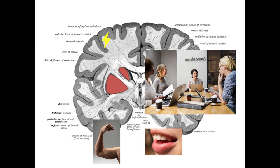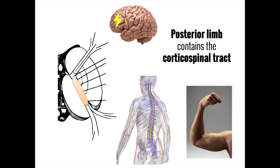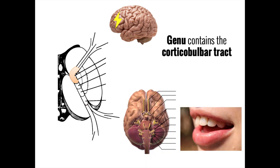So, to recap, the internal capsule bypasses the bureaucracy of the basal ganglia to go straight to the muscles in the rest of the body. The posterior limb contains the corticospinal tract, which goes to the body, while the genu contains the corticobulbar tract which goes to the face.